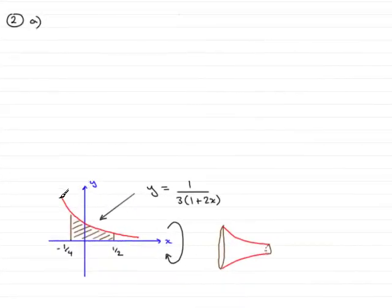In question number two, I've drawn out the graph of the curve y equals 1 over 3 times 1 plus 2x, and it's this shaded area here that is spun about the x-axis and generates a solid, something like this, almost like the bell of a trumpet.